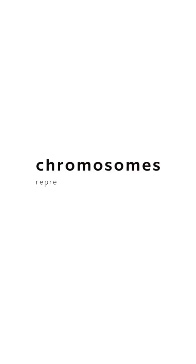Chromosomes represent the most condensed form of chromatin, which is DNA plus protein. We don't see chromosomes when a cell is not dividing because the chromatin is not fully condensed. It's only during cell division that those chromosomes appear — and most people know chromosomes as those fluffy egg shapes.